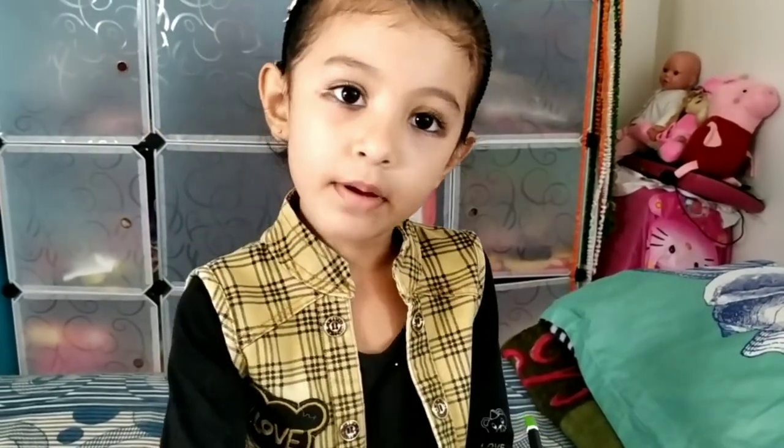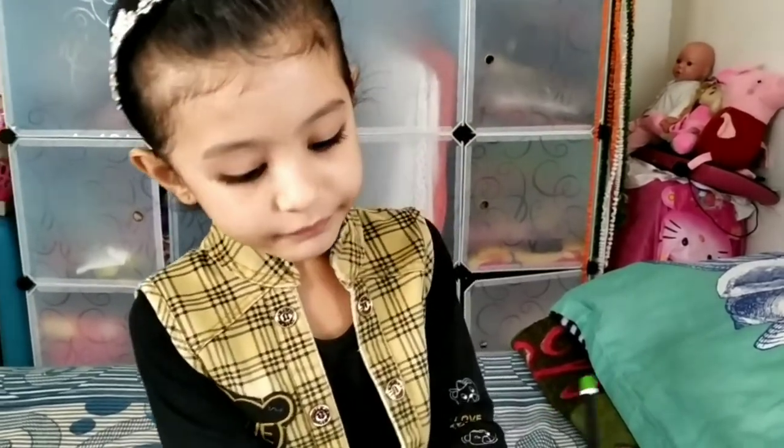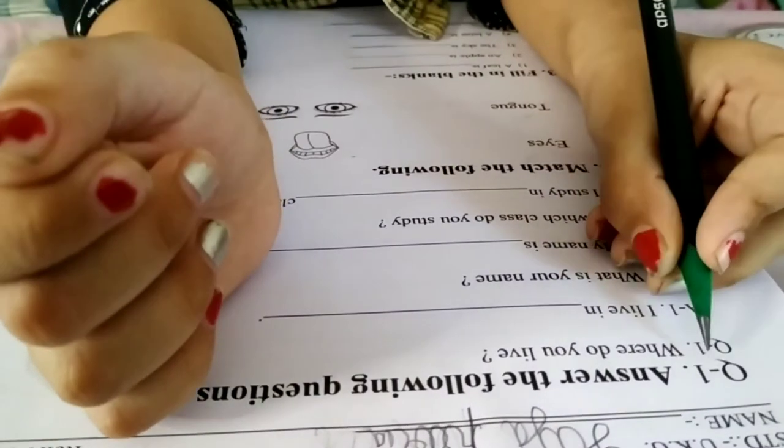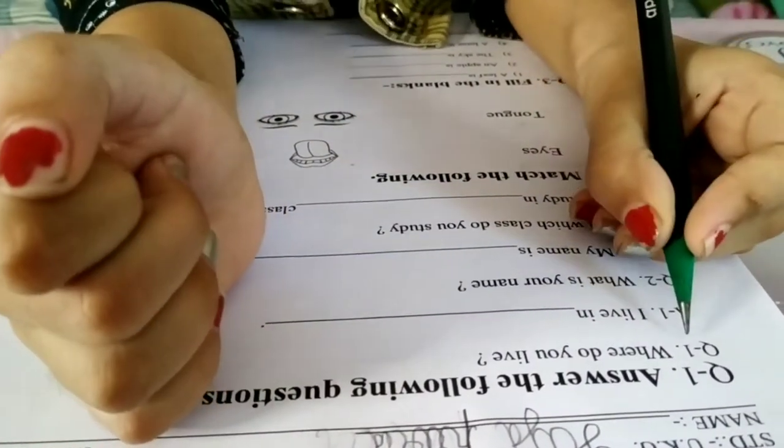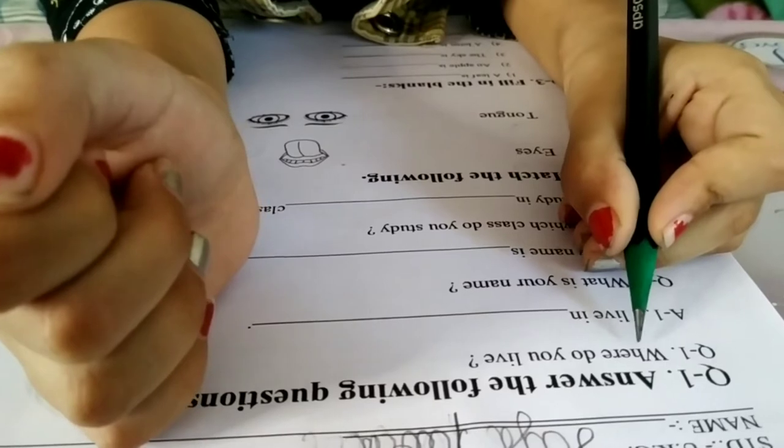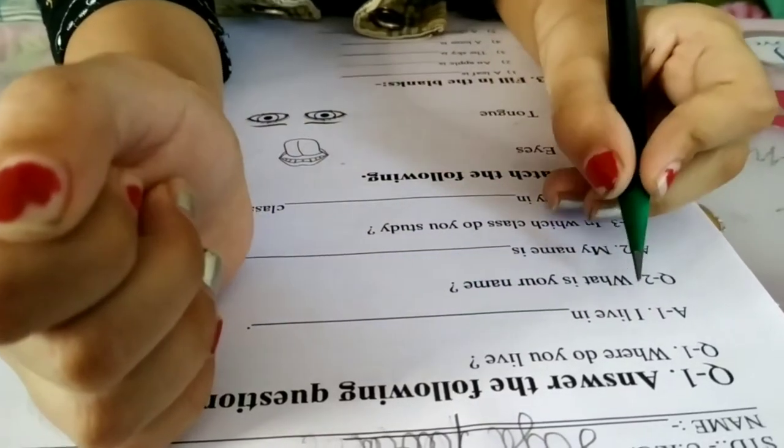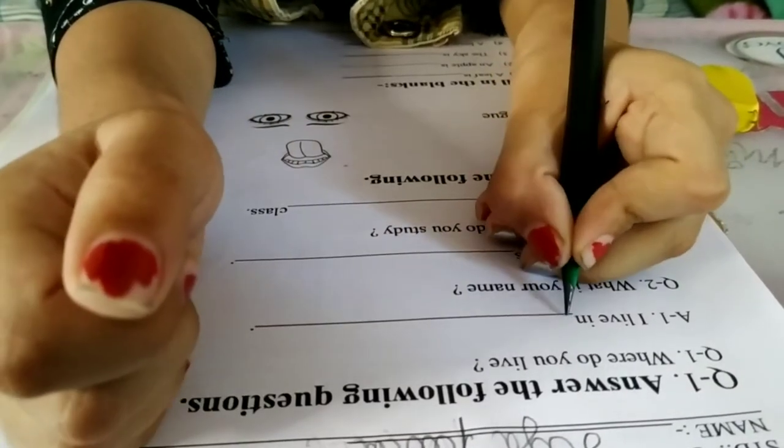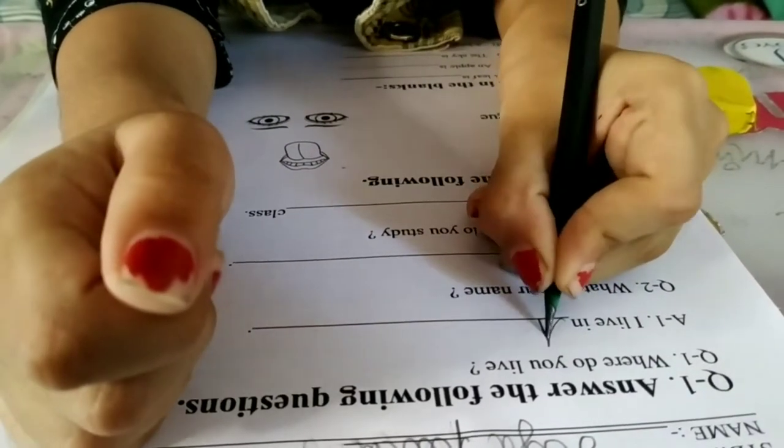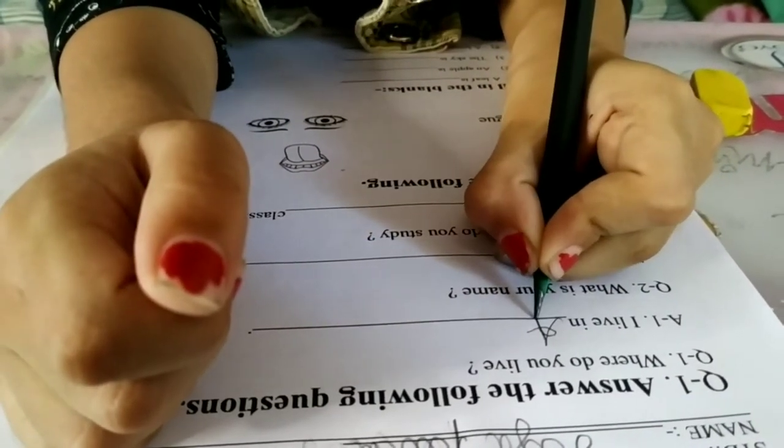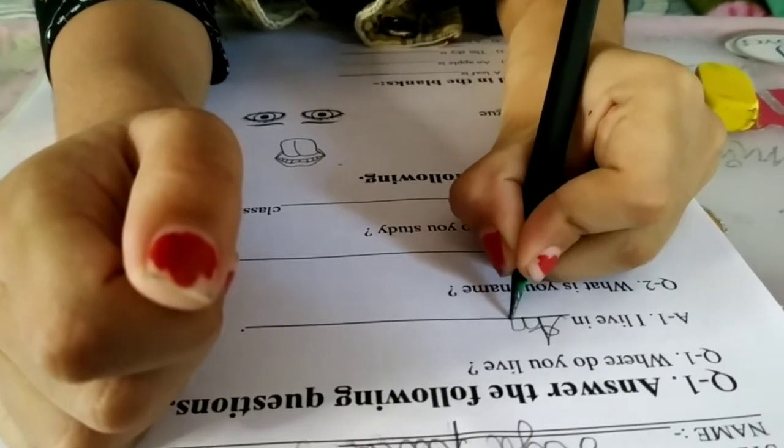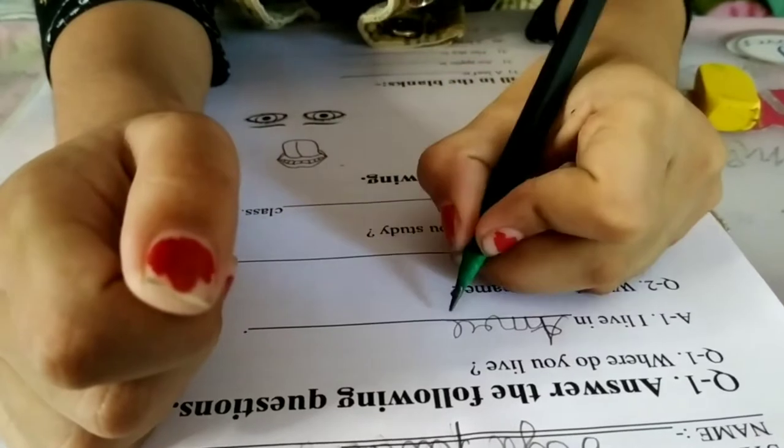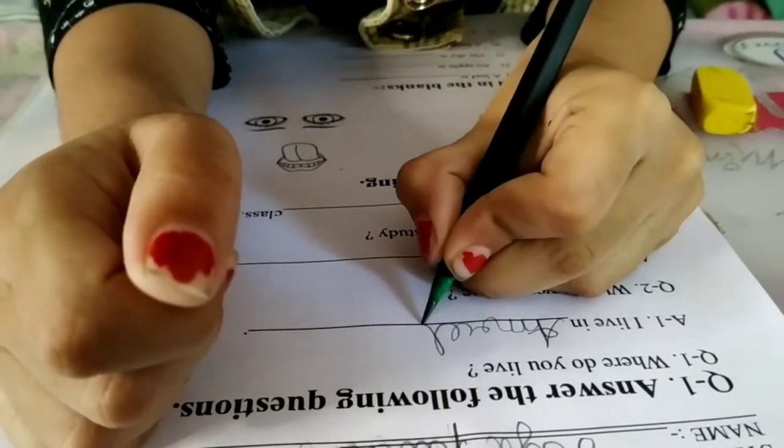GK paper. Question 1. Answer the following question. Where do you live? I live in Amreli. A-M-R-E-L-I.